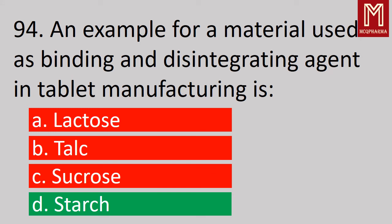Next question, an example of a material used as both a binding and disintegrating agent in tablet manufacturing is — correct answer, Option D: Starch. Starch is used as a binding and disintegrating agent, and it is also used as a diluent.